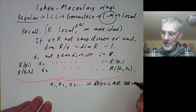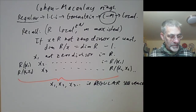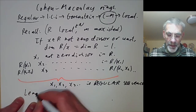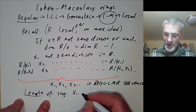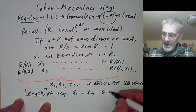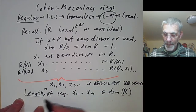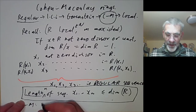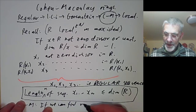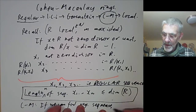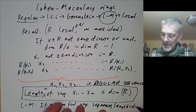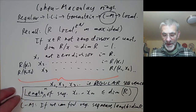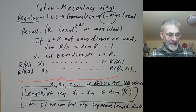This is yet another example of the word 'regular' being heavily overused in mathematics. We notice the dimension drops by one each time, so the length of the sequence x₁ up to xₙ is at most the dimension of the local ring R. We say the ring is Cohen-Macaulay if we can find a regular sequence of length equal to the dimension of R. In general, the largest length of a regular sequence is called the depth of a ring, so a Cohen-Macaulay ring is one in which the depth equals the dimension.